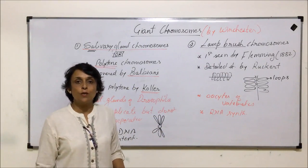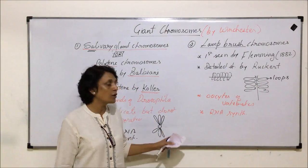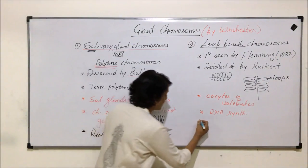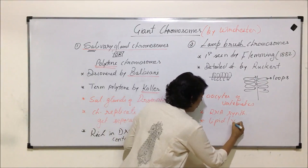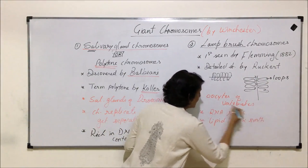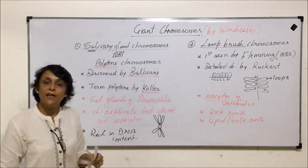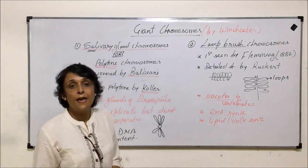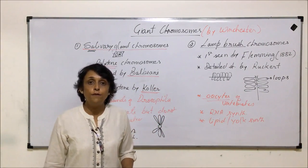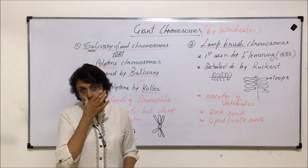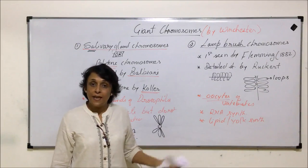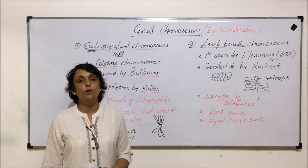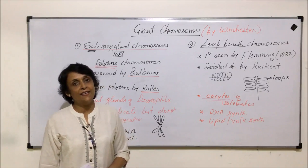Both these chromosomes are found in specific areas for specific functions. Lampbrush chromosomes help in RNA synthesis and also in lipid or yolk synthesis, which is why they are found in oocytes that contain reserve food material as yolk. With this we have completed our first chapter of the unit of genetics, which was the principles of inheritance. The next chapter, starting from the next video, will be the molecular basis of inheritance.